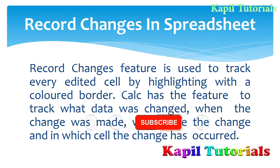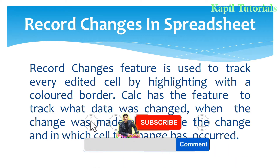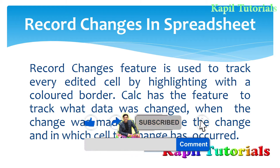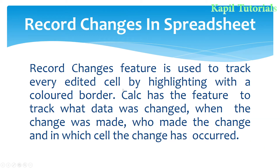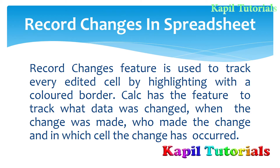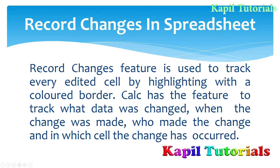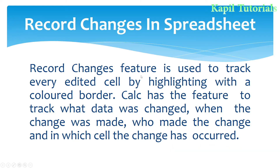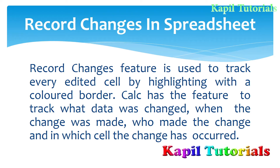Welcome students. My today's topic is Record Changes in a spreadsheet. According to the definition, the Record Changes feature is used to track every edited cell by highlighting it with a colored border. When a spreadsheet is being used by many users and we want to know which user has done what kind of changes, we need this feature. It automatically records whatever changes are made by a particular user.